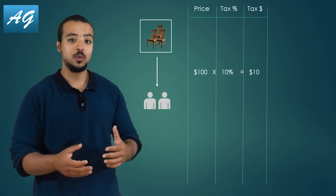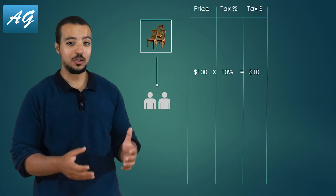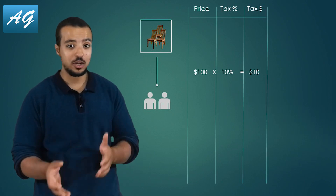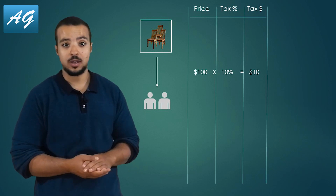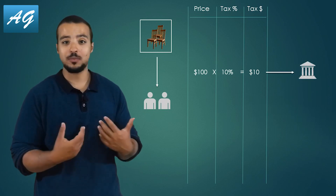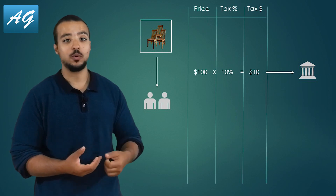To understand the meaning of value-added taxes, let's assume that we are the owners of a store and we sell only one product — shares, for example. We sell the shares for 100 USD each, and in our country the tax rate is 10%. So whenever we sell a share to a customer, the customer has to pay 100 USD plus 10%, which is 10 USD for taxes.